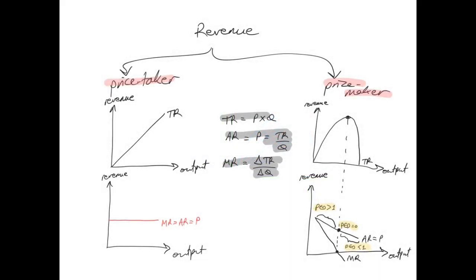Now let's talk about revenue. When economists analyze revenues, they don't look at the short run versus the long run in the same way as they analyze costs and production. They basically look at whether the firm is a price taker — a firm with zero control over price — or a price maker, which has some or full control over price. For a price taking firm, the total revenue curve will be a straight line from the origin, since total revenue equals price times quantity, and price is constant.